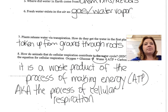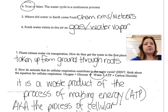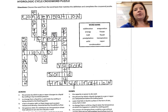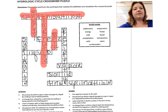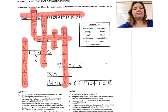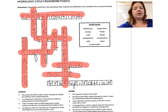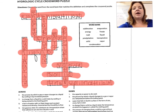Here are the answers for the crossword puzzle. Number one down: energy. Condensation across. Number three down: evaporation. Number five down: melt. Number four down: precipitation. Number six down: sublimation. Number seven across: freeze. Number eight across: liquid. Number nine across: vapor. Number ten across: solid. Number eleven across: transpiration. Go ahead and double-check all of your answers on the crossword puzzle.